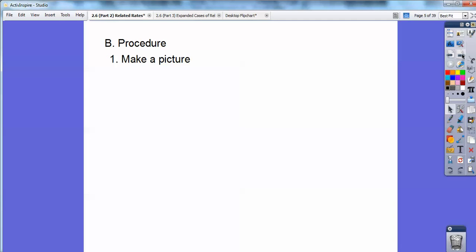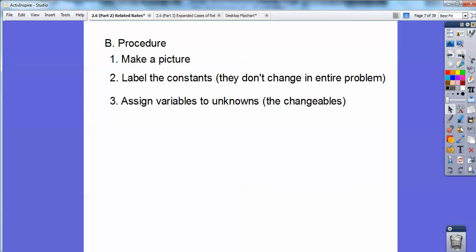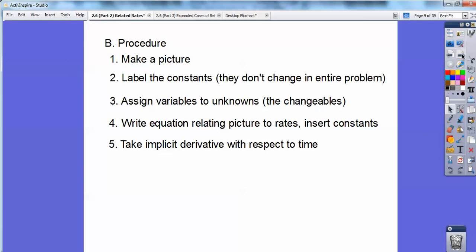So with respect to time procedures. All right, so go ahead and you're going to make a picture. Label the constants, the ones that don't change in the entire problem. And then assign variables to the unknowns so that way you can write an equation that relates to whatever you're talking about. And then you can insert all your constants and your rates and stuff.